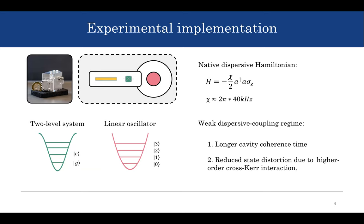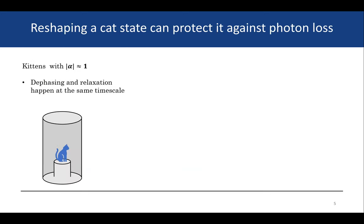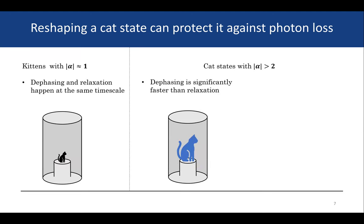The dominant loss channel in these cavities is single photon loss, with dephasing time significantly longer. If you have a cat state in a cavity and you have single photon loss, two things happen: loss of energy and dephasing. For a small cat state (a kitten), both effects have similar timescales. But for large cat states with large alpha, dephasing is significantly faster than relaxation — the cat goes from blue (odd cat state) to completely dephased (black).